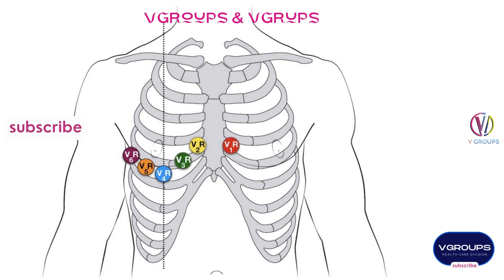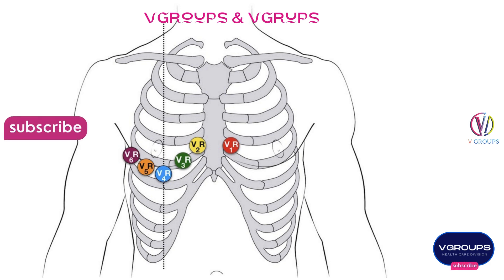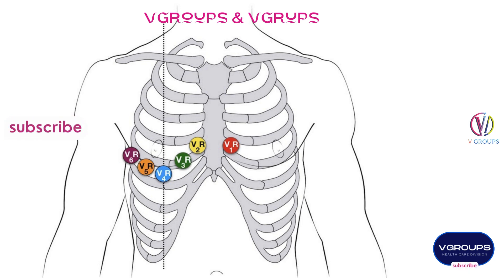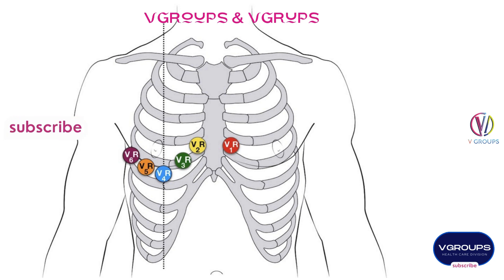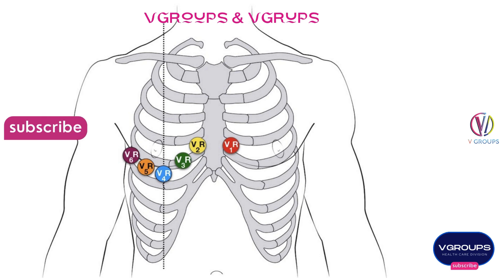Posterior Leads: Leads V7–V9 are placed on the posterior chest wall. V7 is at the left posterior axillary line, in the same horizontal plane as V6. V8 is at the tip of the left scapula, in the same horizontal plane as V6. V9 is in the left paraspinal region, in the same horizontal plane as V6.